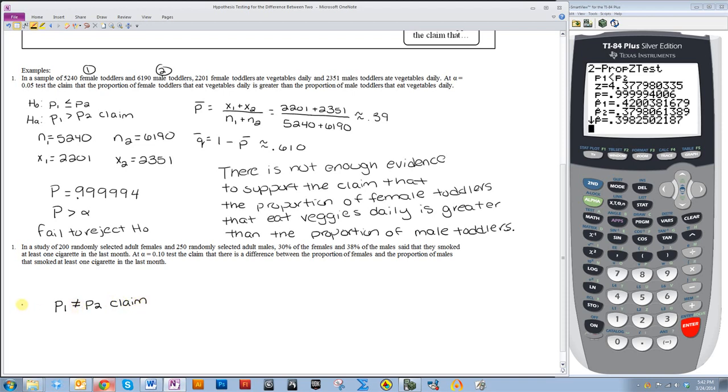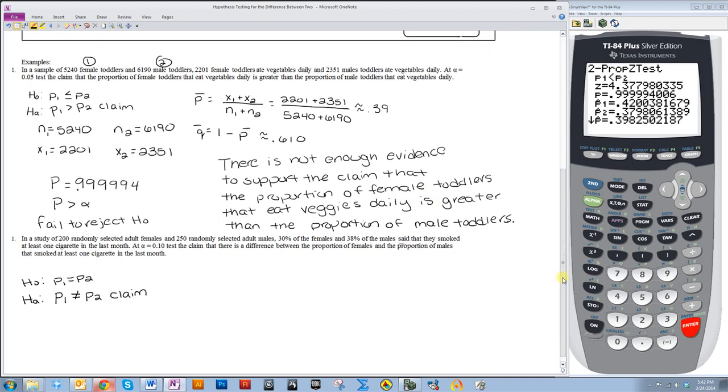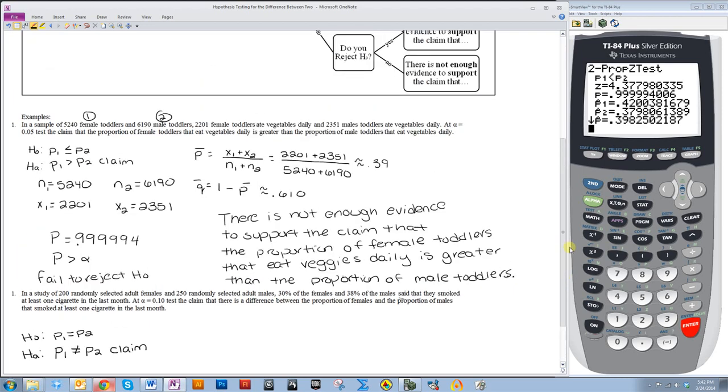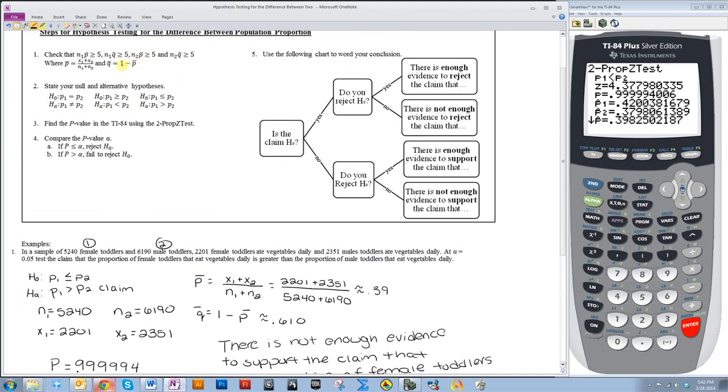So this will be my claim. And since it contains a not equal to symbol, that means it's HA. H0 is the opposite of that, so p1 is equal to p2. Okay, so my null hypothesis and my alternative hypothesis are stated. Now I do need to check and see if I can actually do this. I usually do it afterwards because most of the problems you're going to get are actually going to meet this criteria.